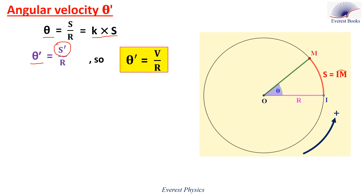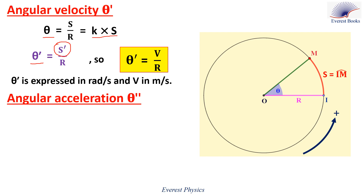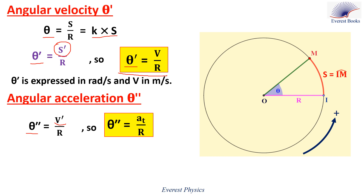Theta prime is the angular velocity — the time rate of change of the angular abscissa. In SI units, theta prime is expressed in radians per second, and v is expressed in meters per second. Now, differentiating theta prime = v/r with respect to time, the derivative of theta prime is theta double prime, and the derivative of v over r is v prime over r. But v prime is the tangential acceleration, so theta double prime equals the tangential acceleration over the radius. Theta double prime is called the angular acceleration — the time rate of change of the angular velocity. In SI units, theta double prime is expressed in radians per second squared, and the tangential acceleration is expressed in meters per second squared.